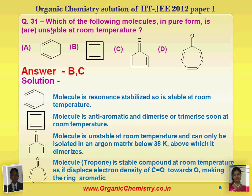Question number 31 is MCQ: which of the following molecules in pure form are stable at room temperature? When we analyze the first molecule, it is resonance stabilized, so it is stable at room temperature. The second molecule is anti-aromatic and dimerizes or trimerizes at room temperature. The third molecule is unstable at room temperature and can only be isolated in an argon matrix below 38 Kelvin, above which it dimerizes. But the last molecule, also called propone, is stable at room temperature.